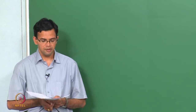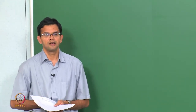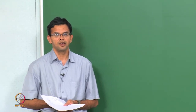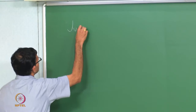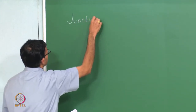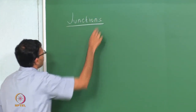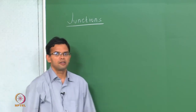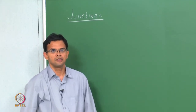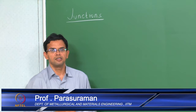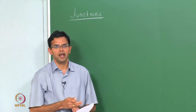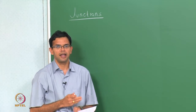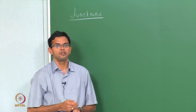Let us start with a brief review of last class. Last class, we started looking at junctions. These junctions can be formed between two semiconductors, between a metal and a semiconductor, or between two metals. We were not concerned about how we will form the junction — we just assume that we have an ideal junction or an ideal interface between the two materials with no defects.